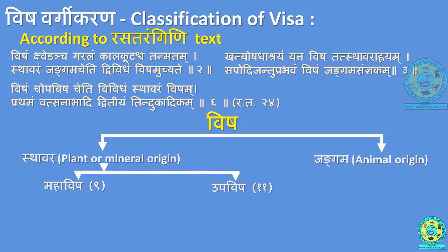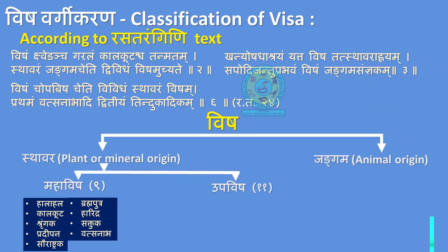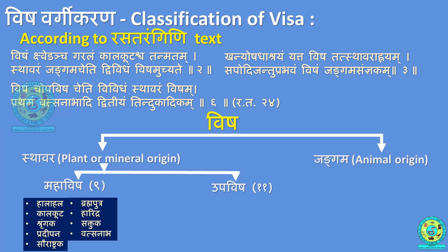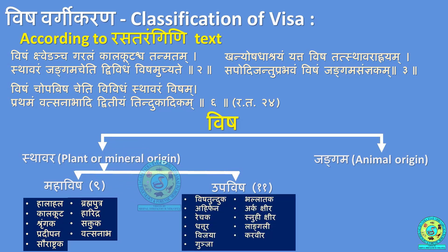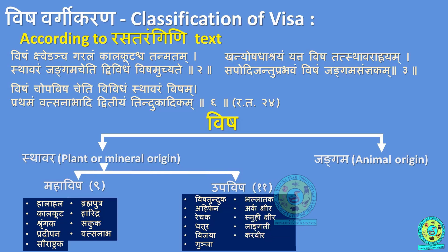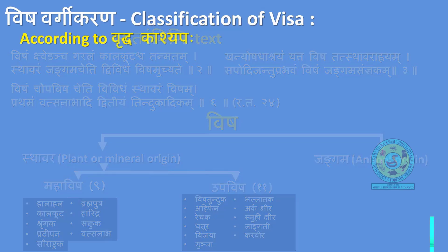Under Mahavisham, the nine drugs are: Halahala, Kalakuta, Shrungaka, Pradipana, Saurashtrika, Brahmaputra, Haridra, Satukha, and Vatsanabha. Under Uppavisham, eleven drugs are listed: Vishatinduka, Ahifena, Rechaka, Dattura, Vijayam, Gunja, Bhallataka, Arkakshira, Snuhikshira, Langali, and Karavira.